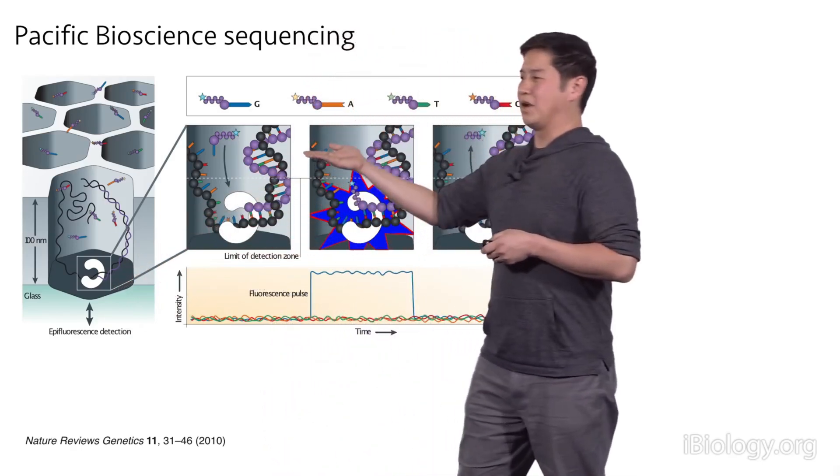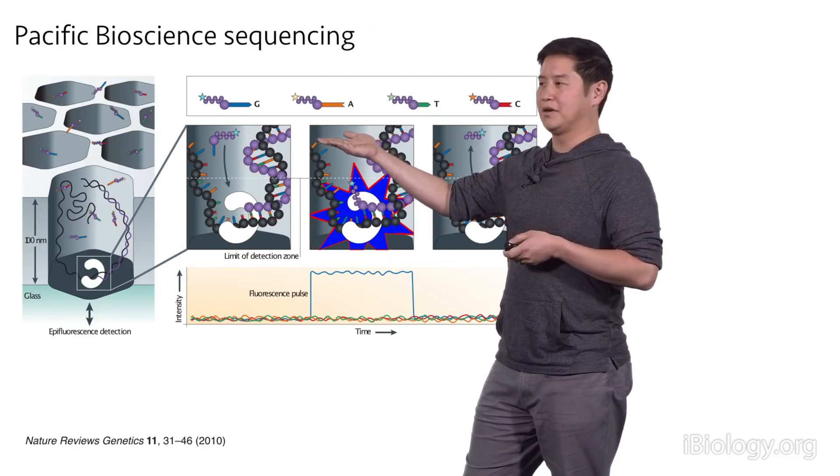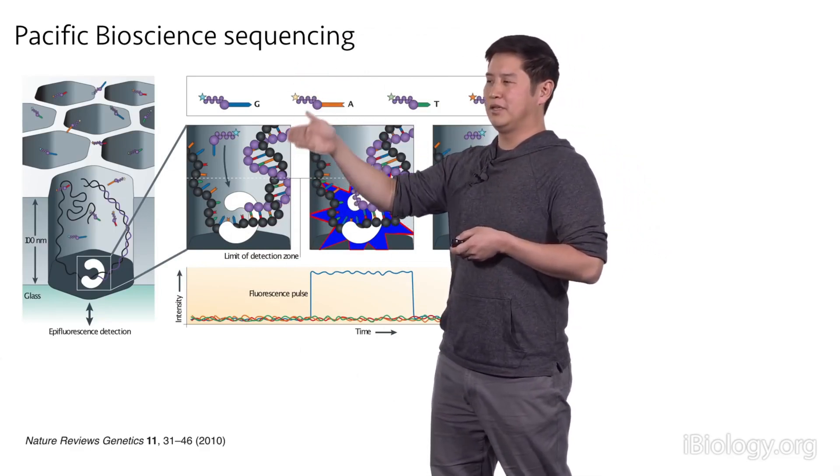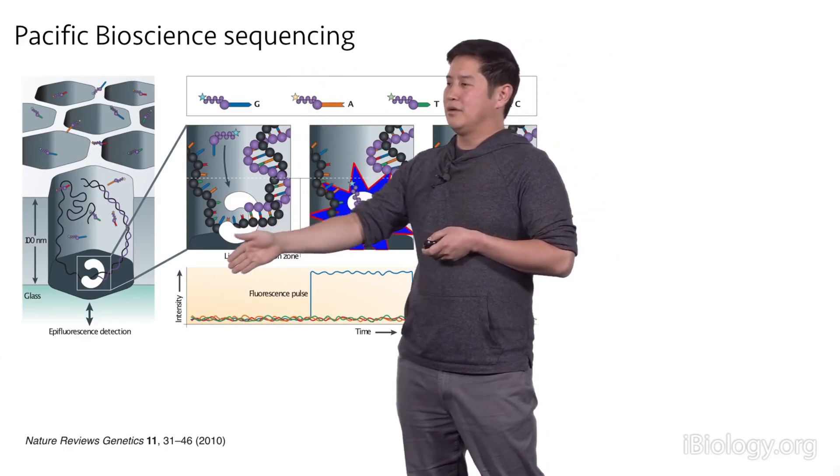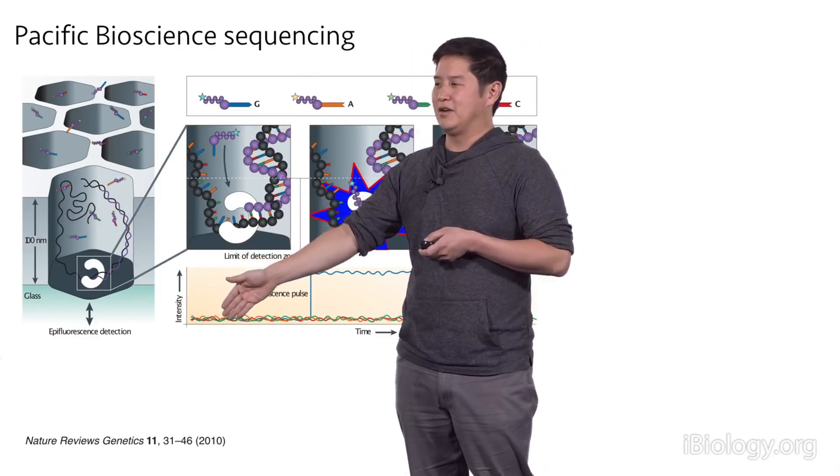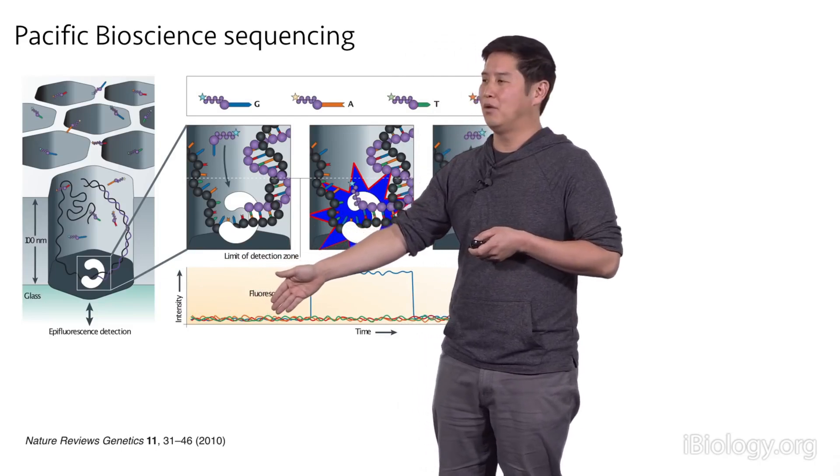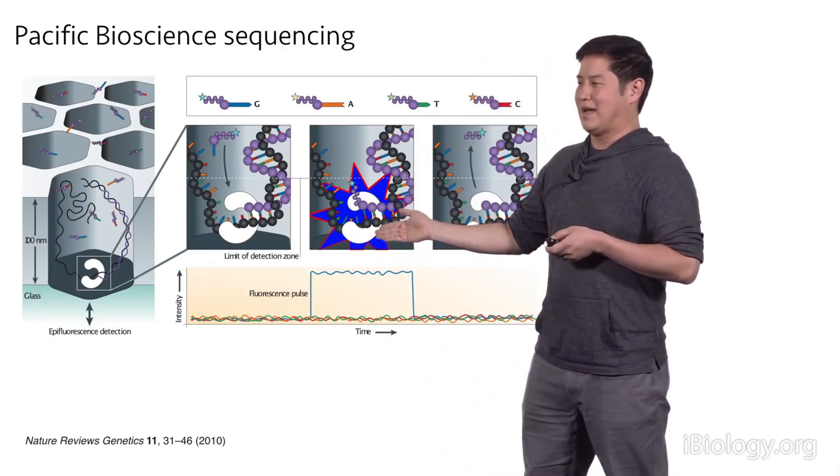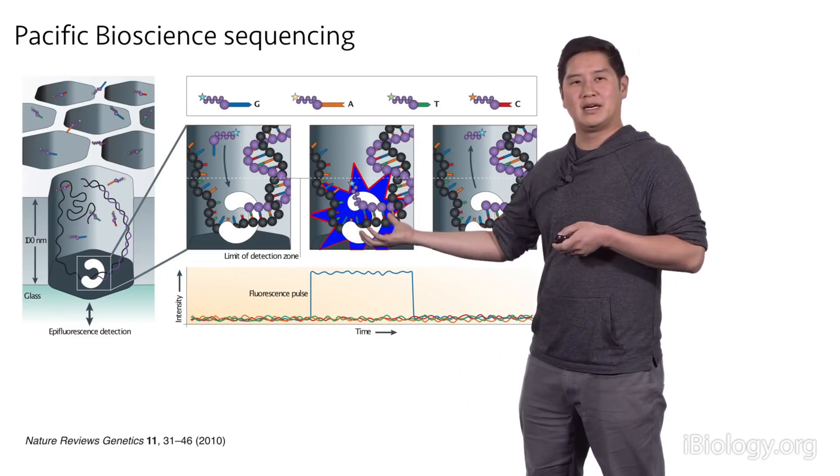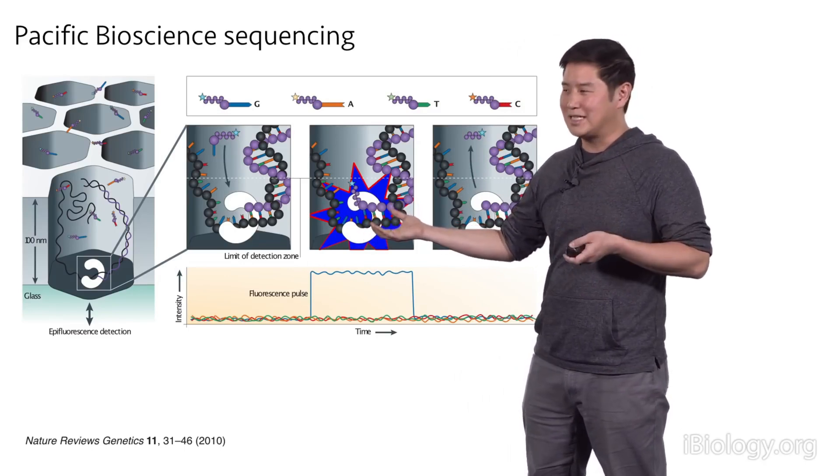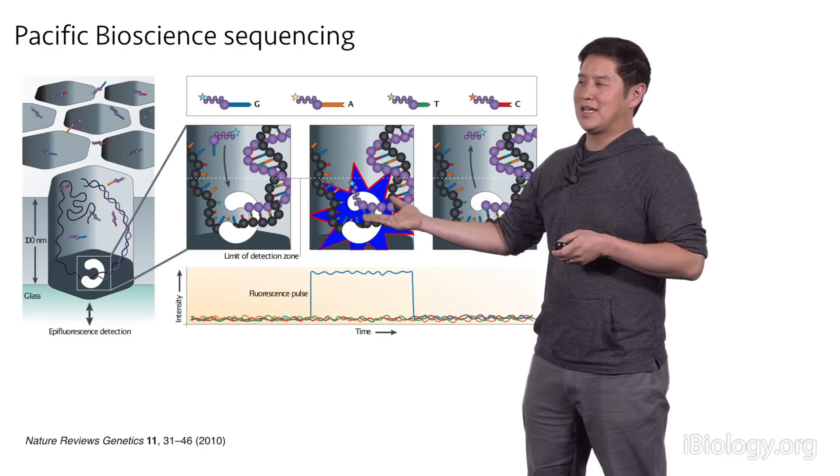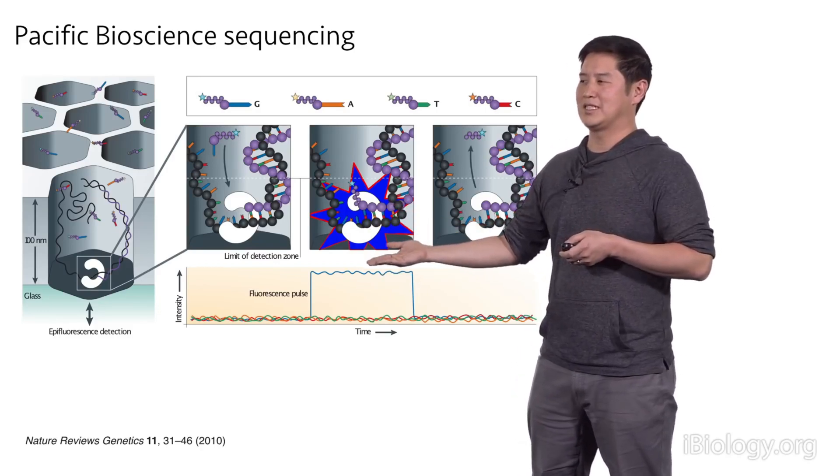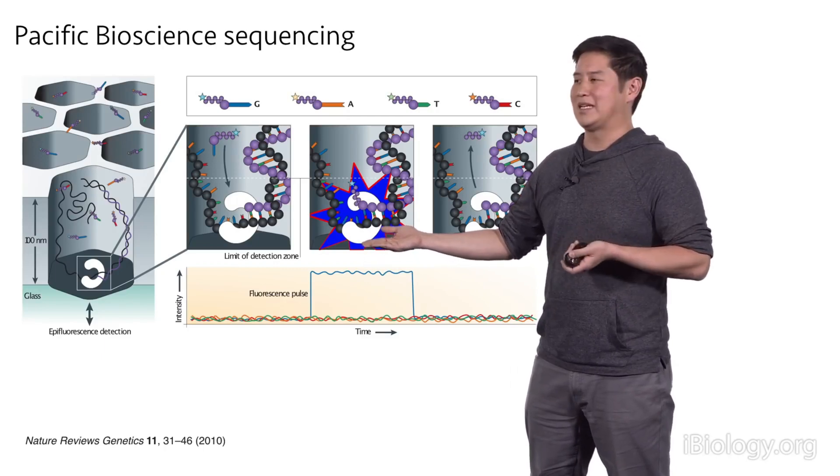So remember, we have four different bases that have four different colors. And these bases are flowing in and out of this well really, really quickly. And so you get a signal that's just kind of very noisy. You don't really see anything happening. But when the proper base is bound to the polymerase and matches the template, it actually dwells there for a certain amount of time. It's really a split second. But that split second gets recorded by the video and you see this bump up in the fluorescent signal, in this case blue, which is the G base.